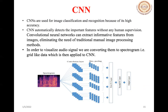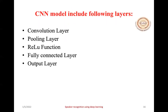CNNs are used for image classification and recognition because of their high accuracy and ability to automatically detect important features without human supervision. Since we are doing audio/speaker classification rather than image classification, we convert the audio sample to a spectrogram so it can be visualized, then apply CNN. CNN involves a convolutional layer, pooling layer, ReLU activation function, fully connected layer, and output layer.